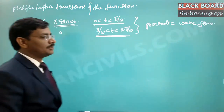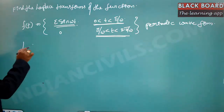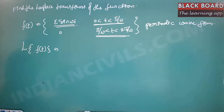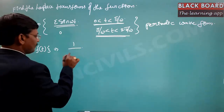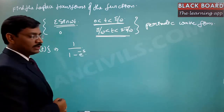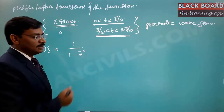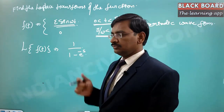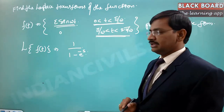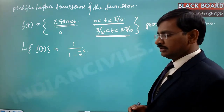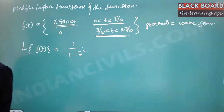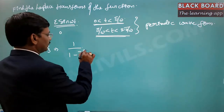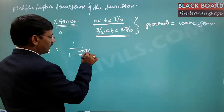For finding the Laplace transform of any periodic waveform, L{f(t)} is equal to 1 divided by (1 minus e^(−sT)), where T is the period of the waveform. The period here is 2π/ω, because the function starts from 0 and ends at 2π/ω.